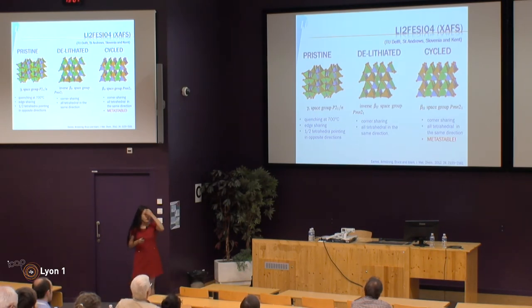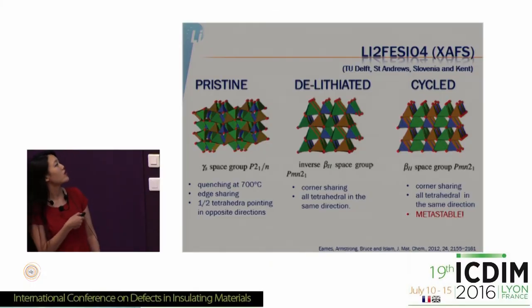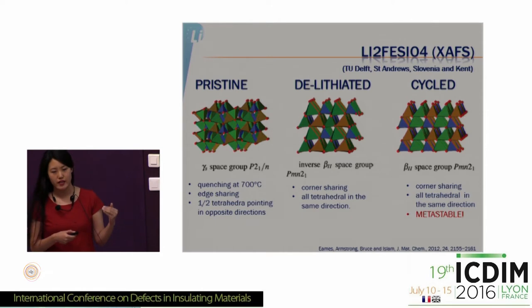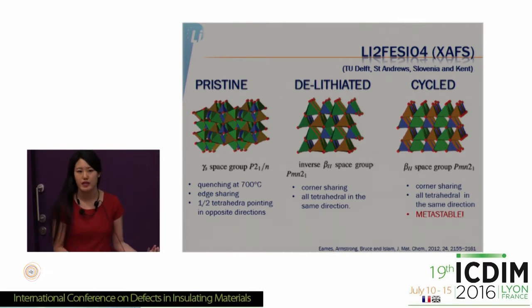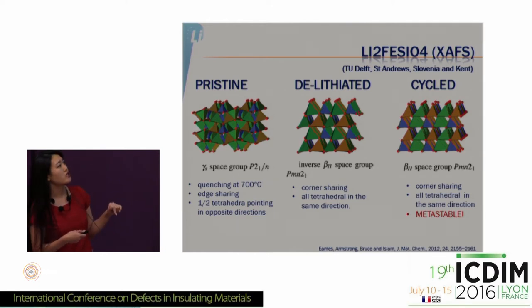I will introduce the structure of lithium iron silicate. In the pristine material — when you have not been cycling the battery — it has a gamma space group, made by quenching at 700 degrees, and half of the tetrahedra are pointing in opposite directions, sharing edges. When you delithiate — removing lithium ions — and then discharge the battery by putting lithium back into the structure, you get the beta-2 space group, where all tetrahedra point in the same direction and share corners.